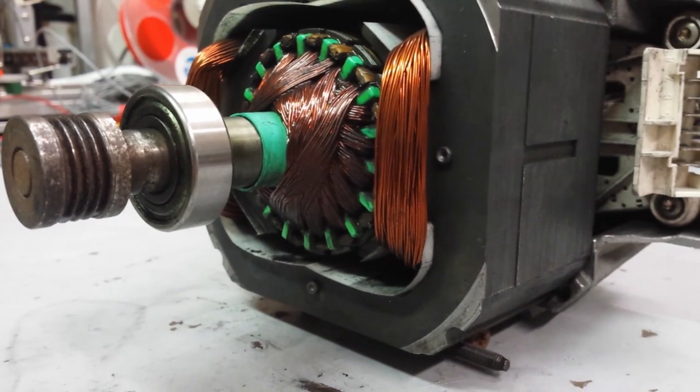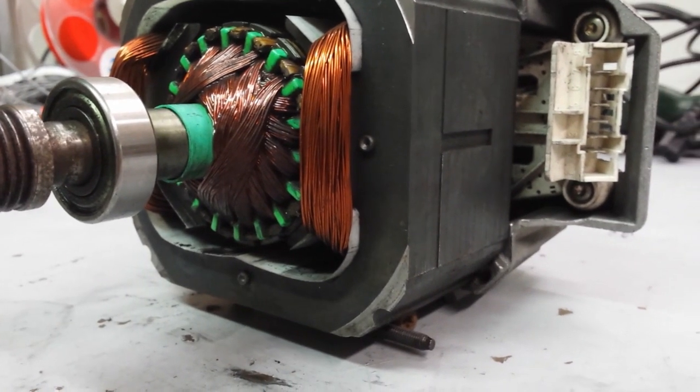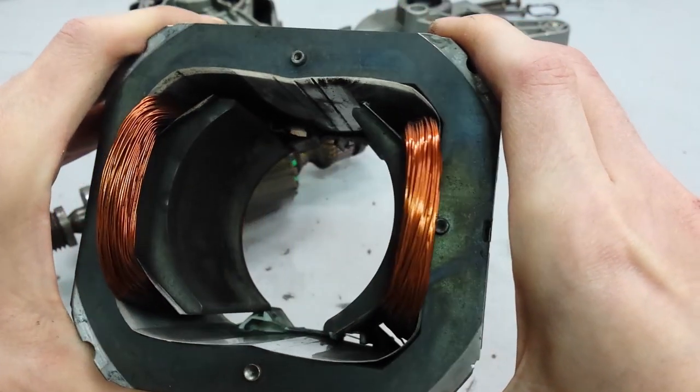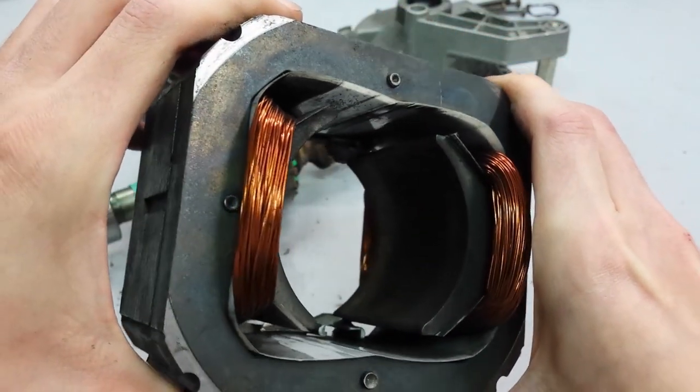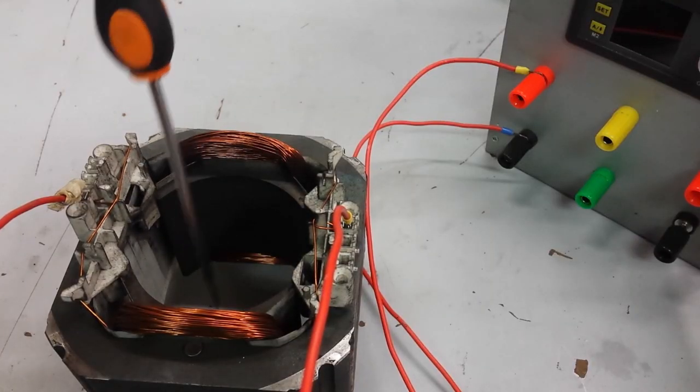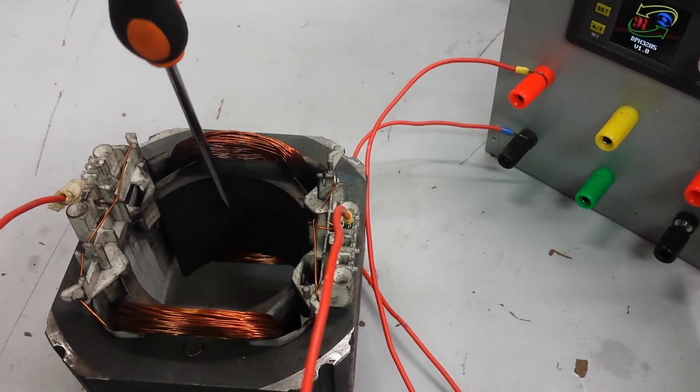Instead of permanent magnets two identical coils are placed on the magnetic core which confines the field these two generate when powered. They are basically two electromagnets and the field is present in the stator if and only if the stator is powered.